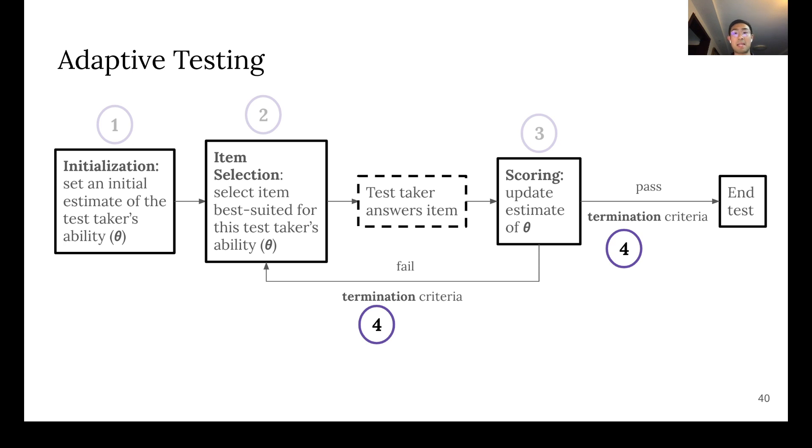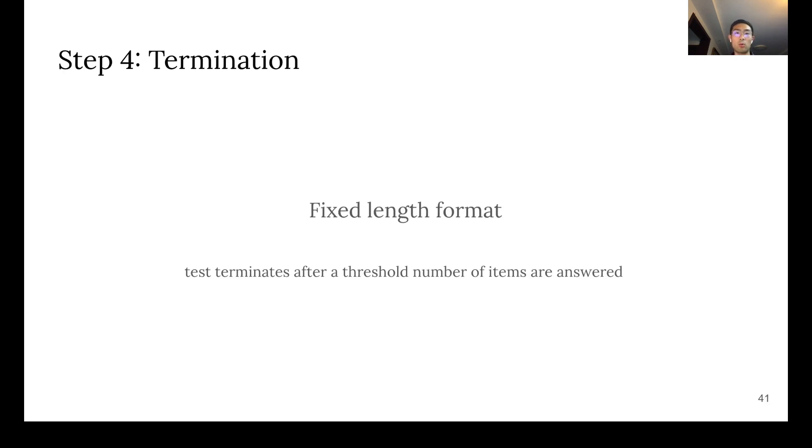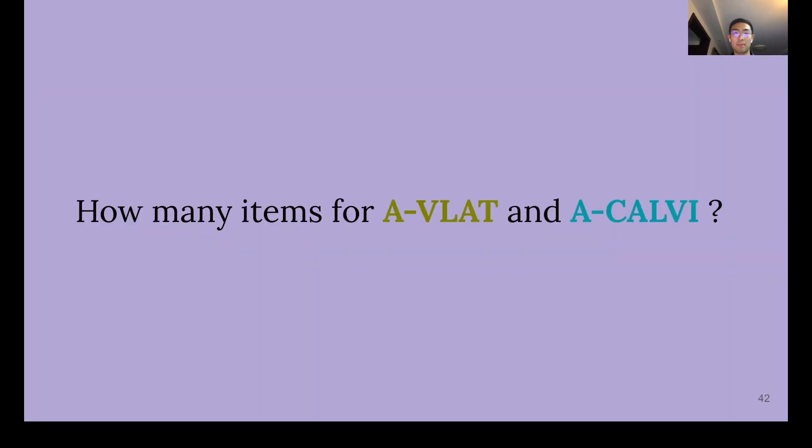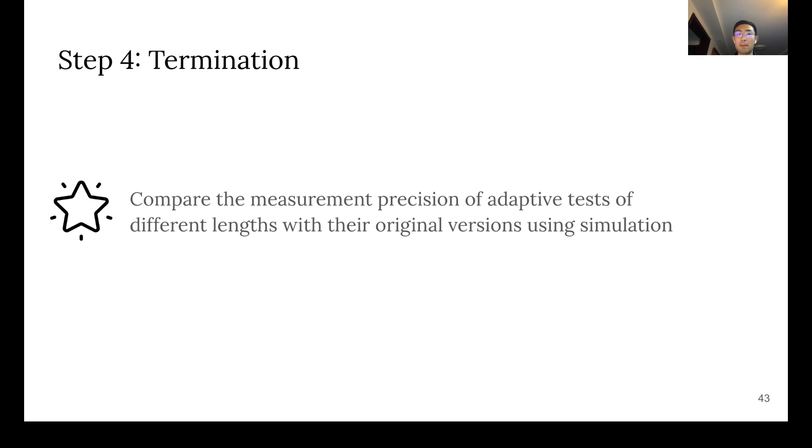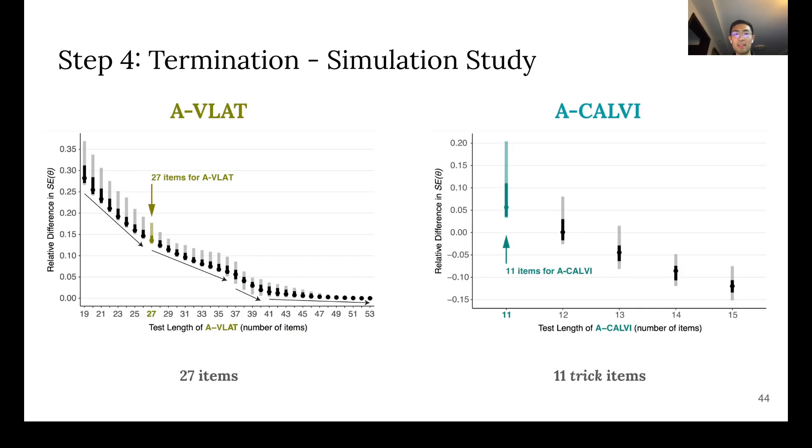I want to spend a bit more time talking about step 4, termination. We decided that we want our adaptive tests to have a fixed length format, meaning that they will terminate after a threshold number of items are answered. The question then becomes, how many items should A-VLAT and A-CALVI have? We answered this question by comparing the measurement precision of adaptive tests of different length with the original versions using simulation. After analyzing the results and considering the trade-off between test length and measurement precision, we chose 27 as the length of A-VLAT and 11 as the number of trick items for A-CALVI.